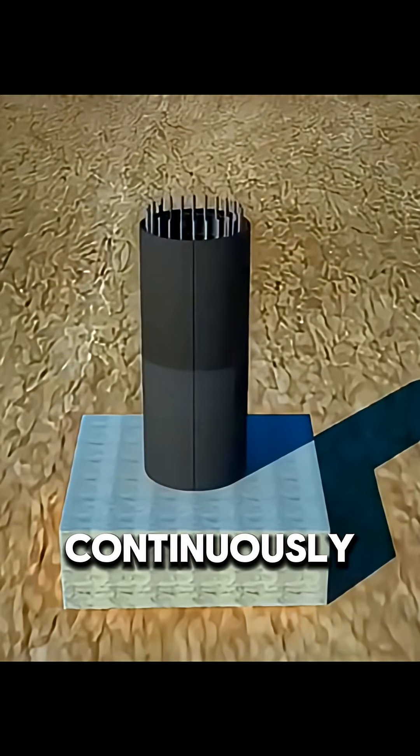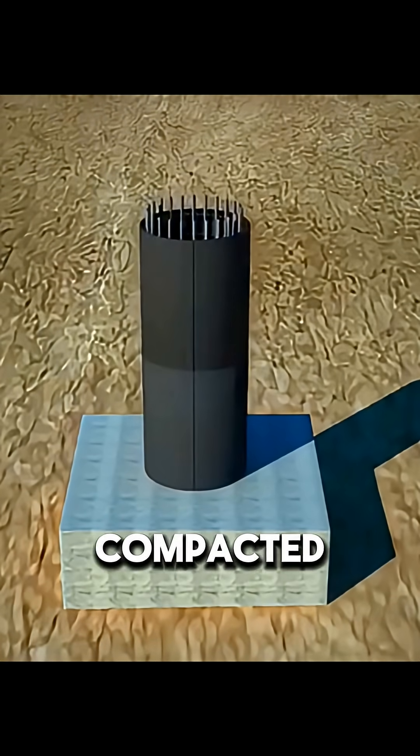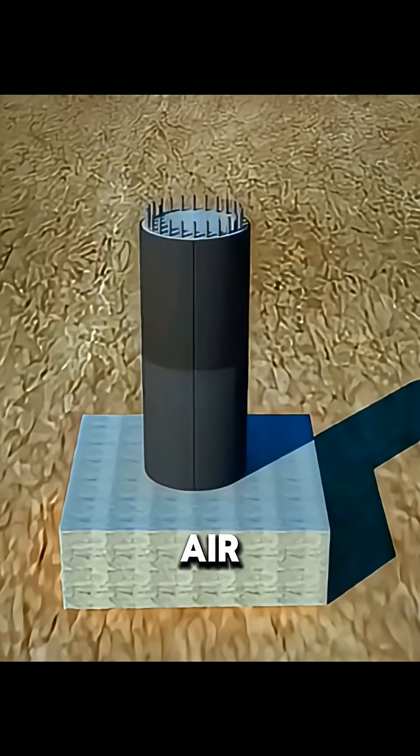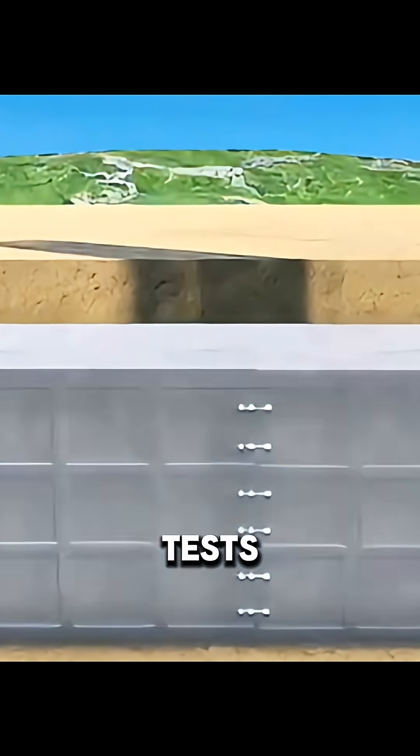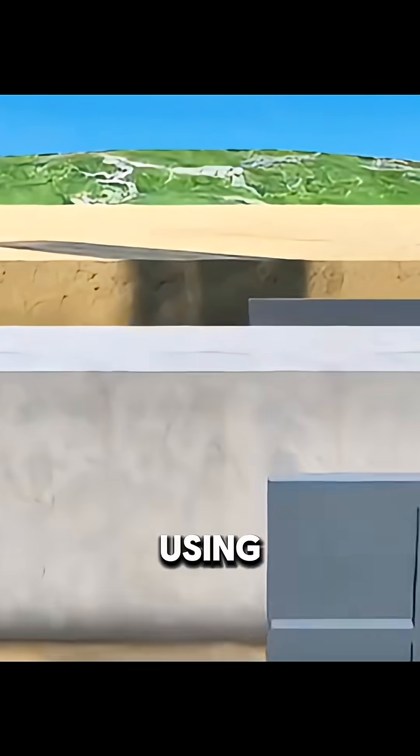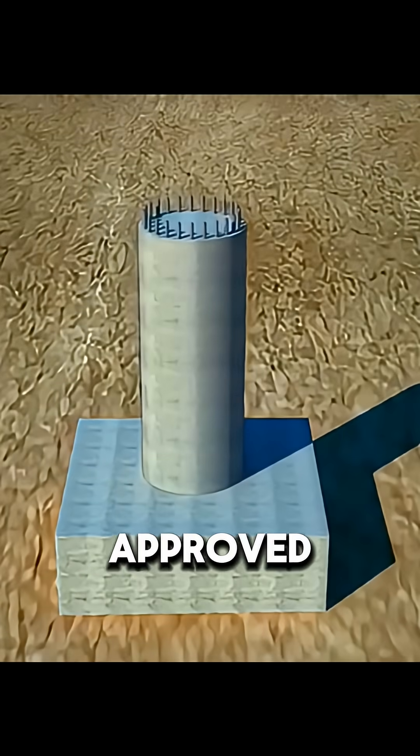Concrete is poured continuously without interruption and compacted by vibration to eliminate air gaps. After the first pier passes strength and alignment tests, the remaining piers are built using the same process. Once all piers are approved, the girder launcher moves into action.